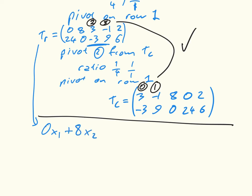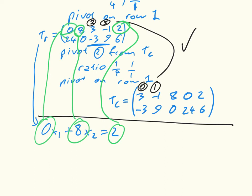So this tableau corresponds to 0x1 plus 8x2 equals 2. That 2 is that 2, this 8 is this 8, this 0 is this 0. And 24x1 plus 0x2 equals 6. The whole point of what we've done is we've made these straightforward to solve. This simply gives us that x1 and x2 is equal to a quarter, a quarter.